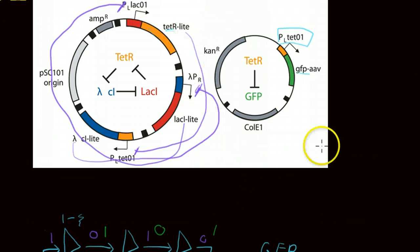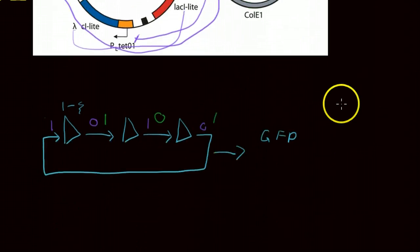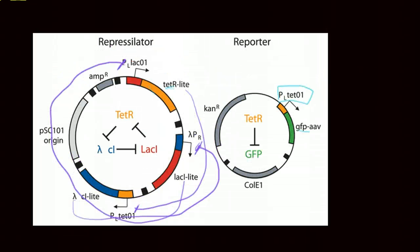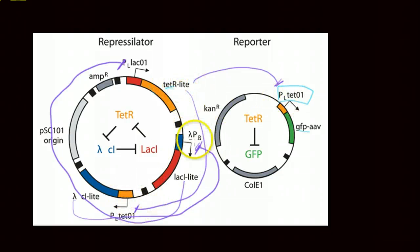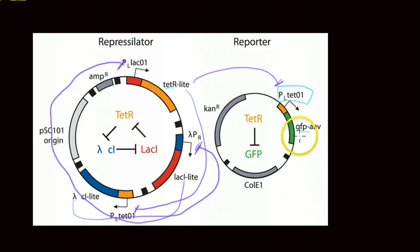TetR production and its output tell you what state the system is at. You'll notice that PLTetO1 promoters are the same and acted on by the same protein. If PLTetO1 is inhibited, then GFP is not produced. It's easier to think about this in terms of zeros and ones again.